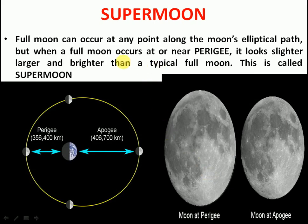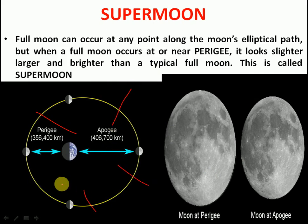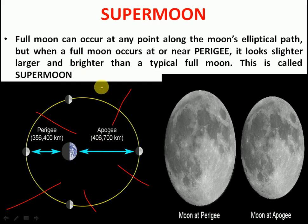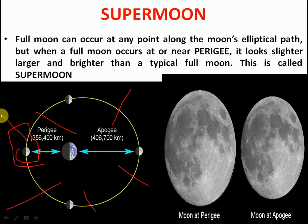The full moon can occur at any point in the elliptical path. But when the full moon occurs at or near perigee, it looks slightly larger and brighter than a typical full moon — this is called a supermoon.